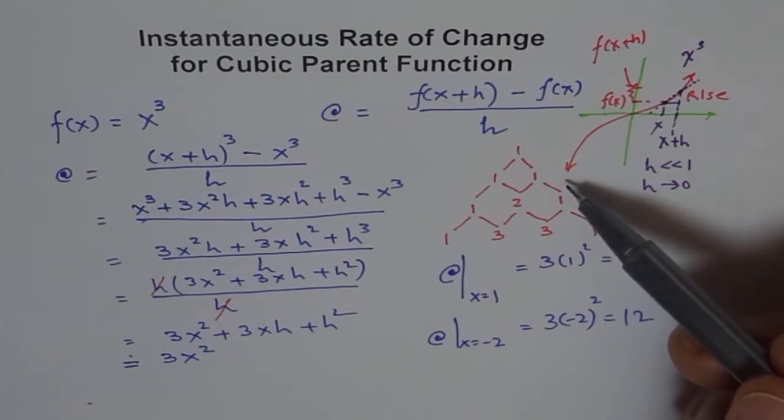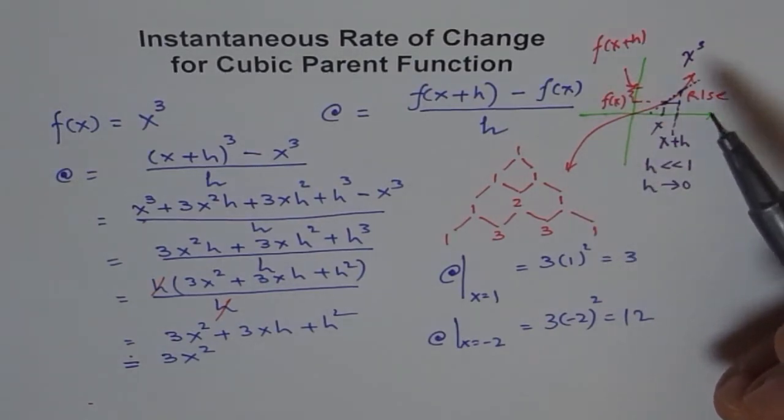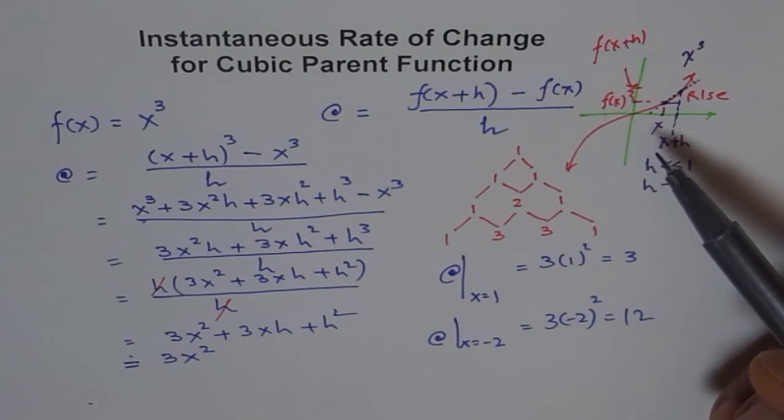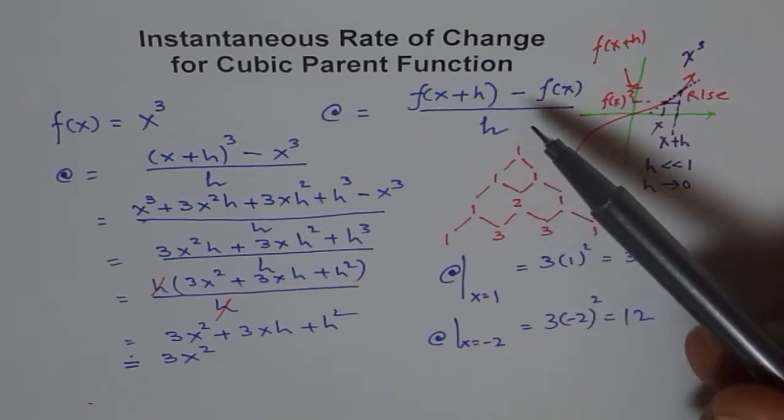We expect this function to have a positive slope or positive rate of change. It goes from minus infinity to positive infinity. That means the function is always increasing, and therefore at any point in your cubic function you will get a positive instantaneous rate of change in the parent cubic.